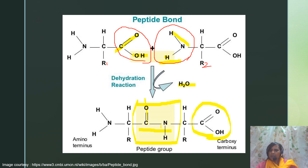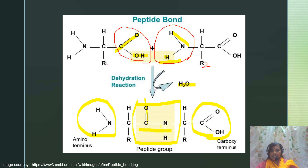In a polypeptide, one end has a free amino group called the amino terminus or N-terminus, and another end which has a free carboxylic group is called the carboxy terminus or C-terminus. Each amino acid of this polypeptide is referred to as a residue.